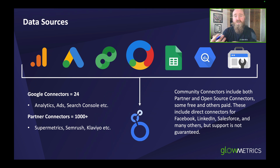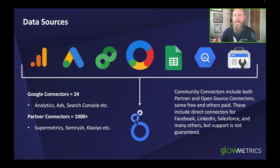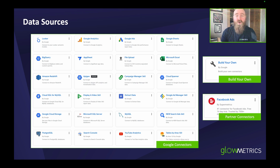In terms of the basics of Looker Studio, whether you're on the normal model or the pro model, you need a data source to connect to Looker Studio. To connect, we use data connectors and there are two main types: Google connectors — the native connectors supported by Google and Looker Studio — and partner connectors, which are third-party paid connectors from services like Supermetrics, SEMrush, and many other tools. There are over thousands of connectors, but only around 24 of those are Google native connectors.